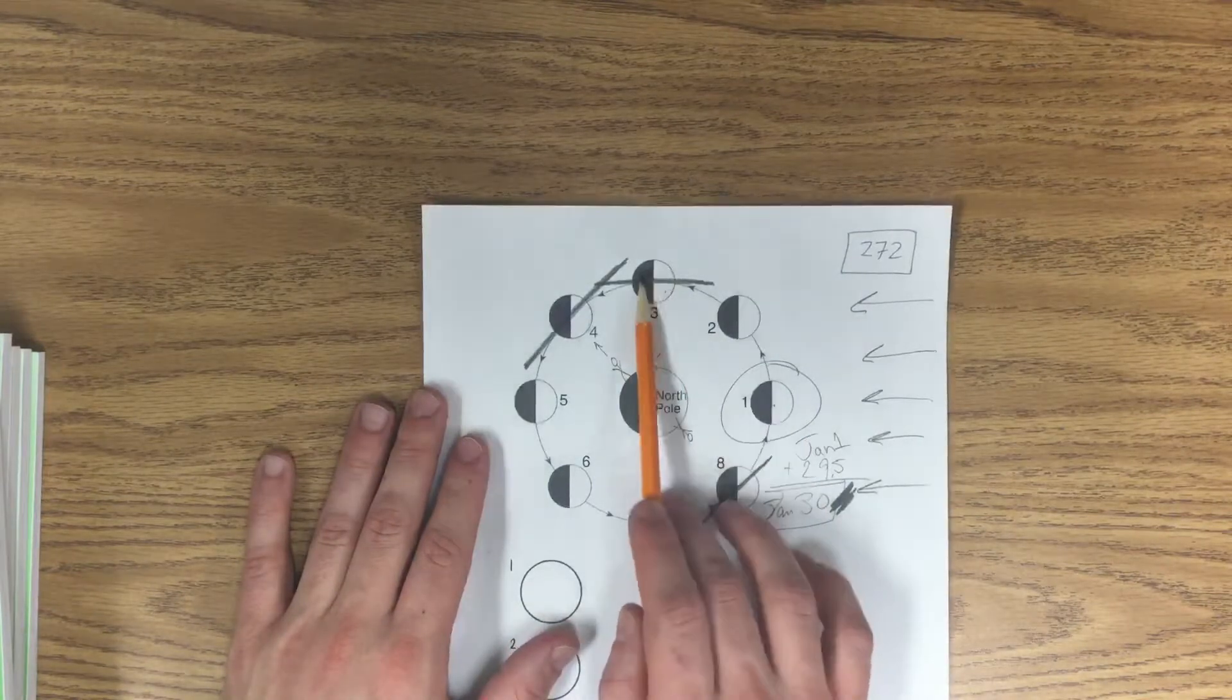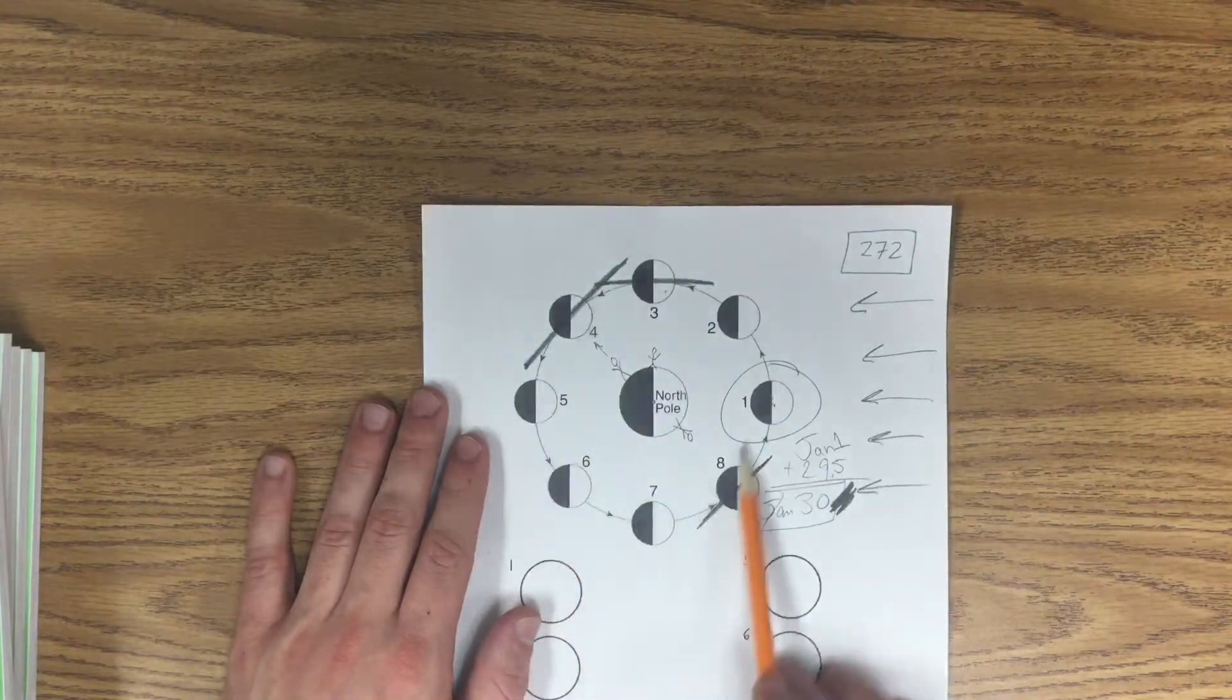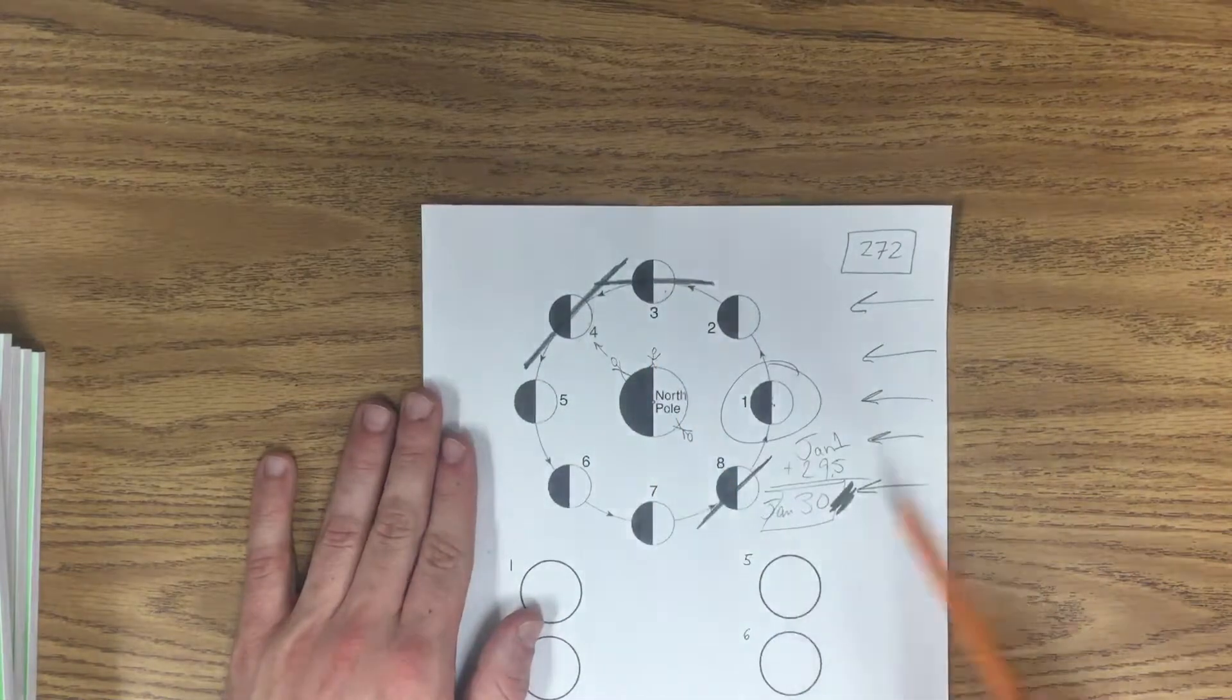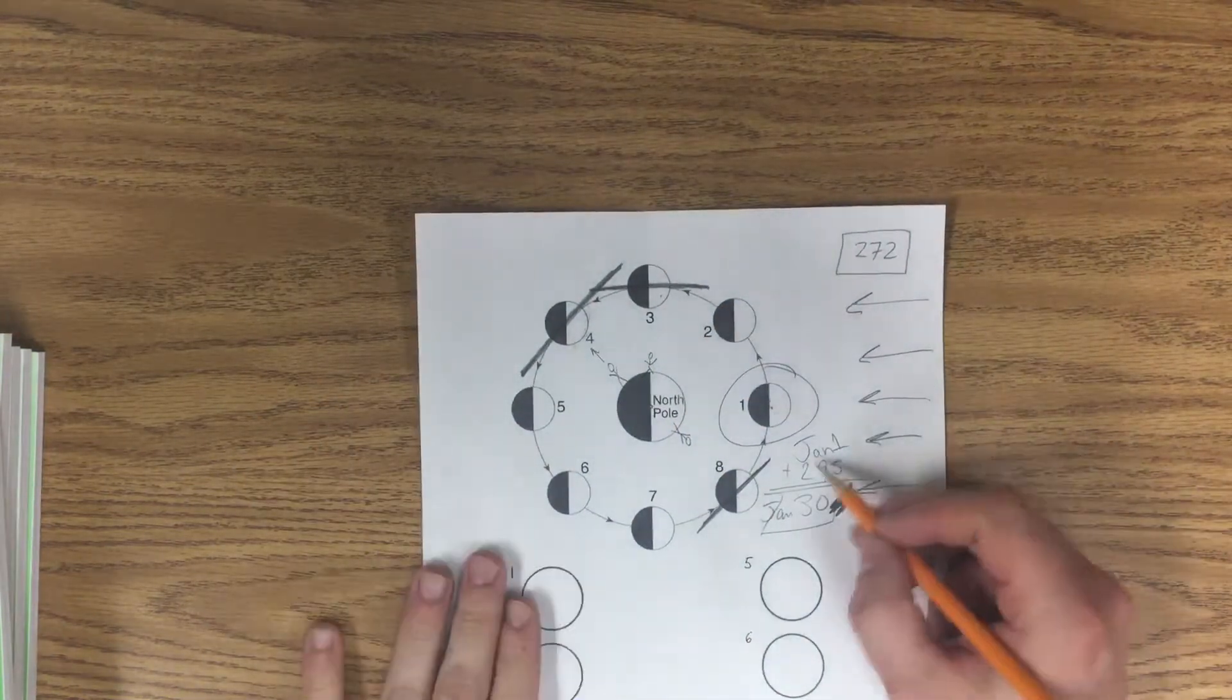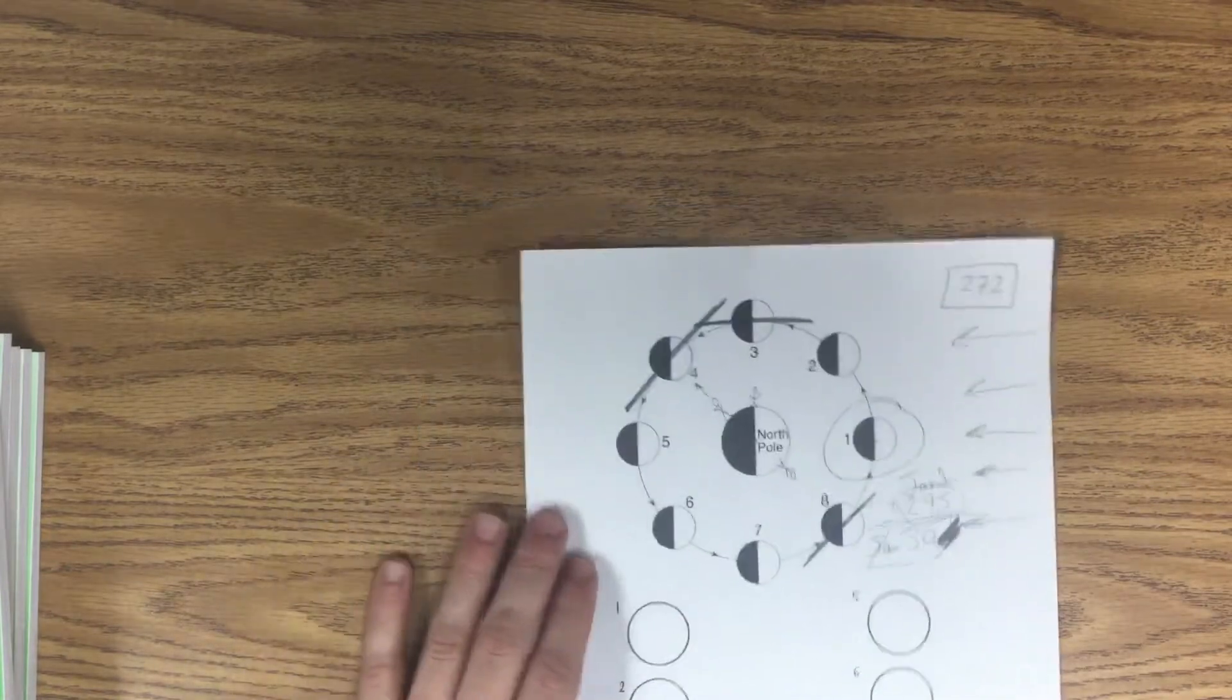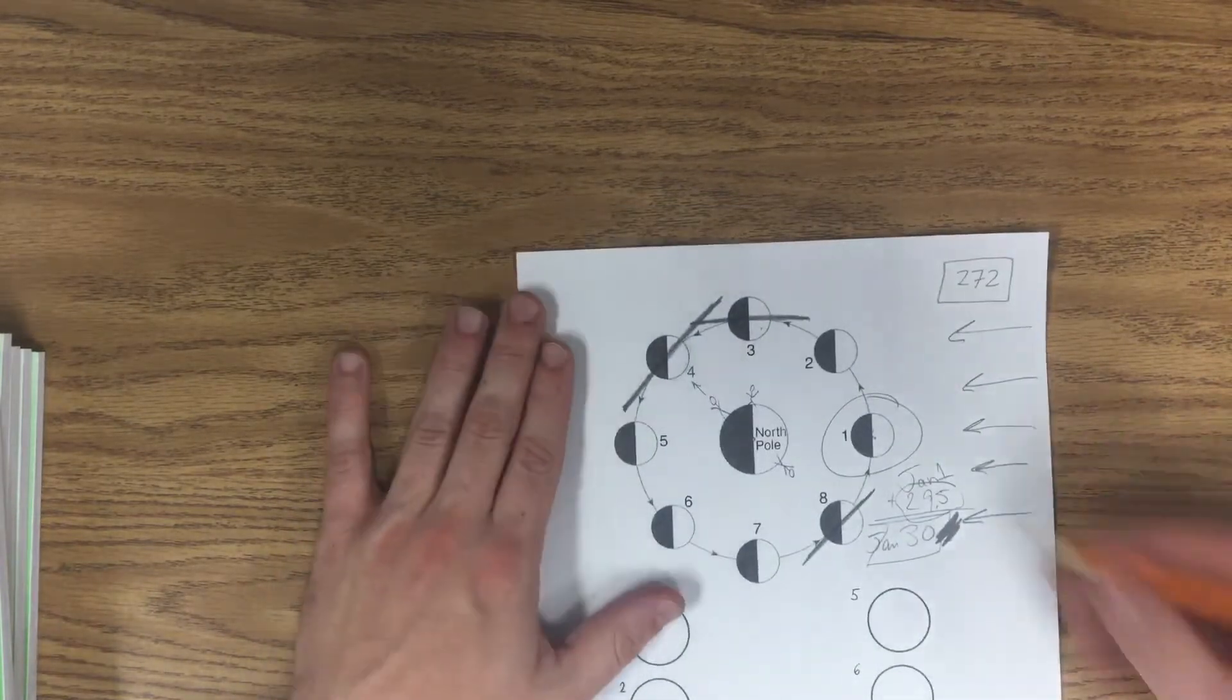If it's January 1st right here, it's going to be January 30th just like how if it's January 1st here when the moon's right there, it'll be January 30th when it gets back to there. It just takes one complete cycle to go 29.5 days.